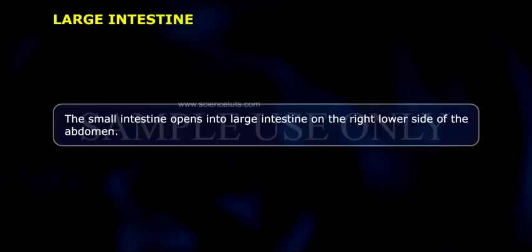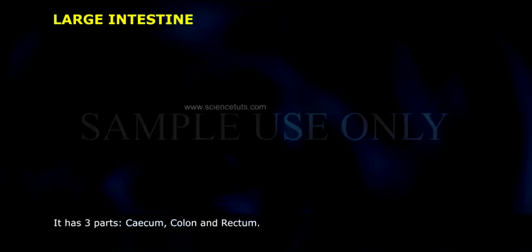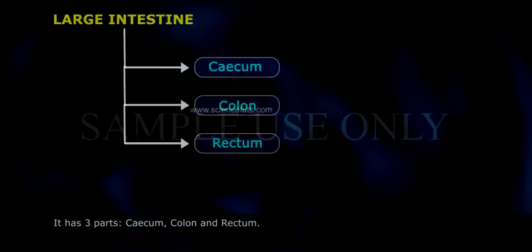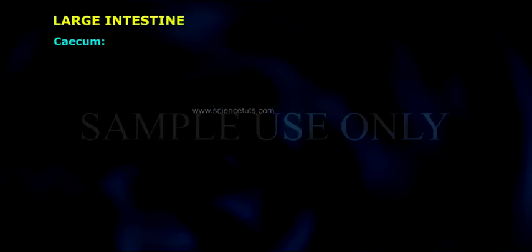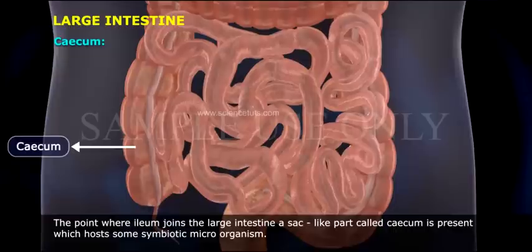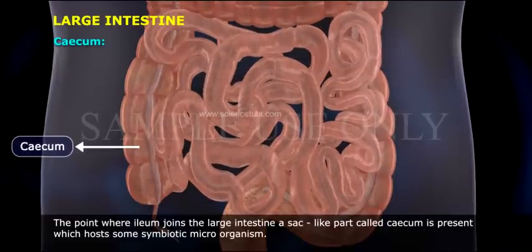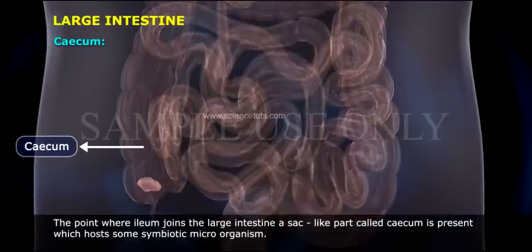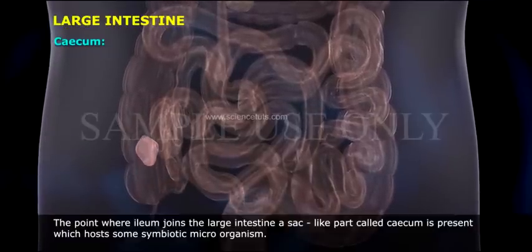Large Intestine: The small intestine opens into the large intestine on the right lower side of the abdomen. It has three parts: cecum, colon, and rectum. The cecum is found at the point where the ileum joins the large intestine; it is a sac-like part that hosts some symbiotic microorganisms.